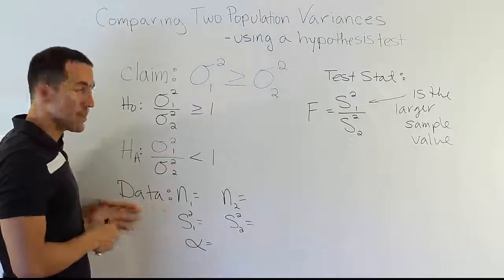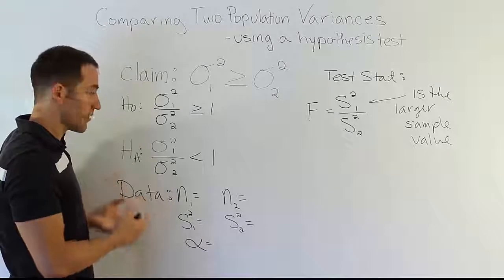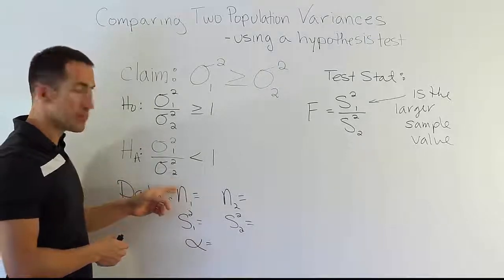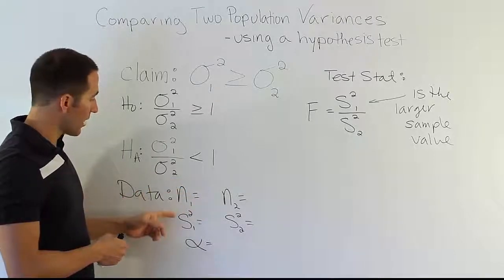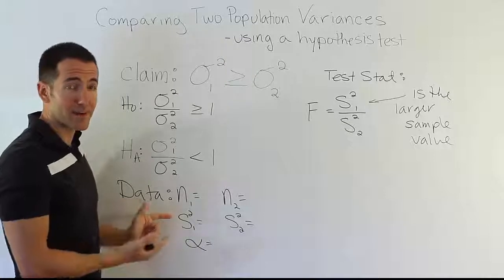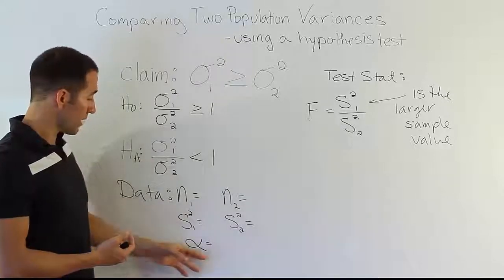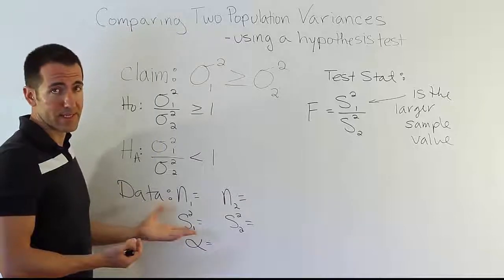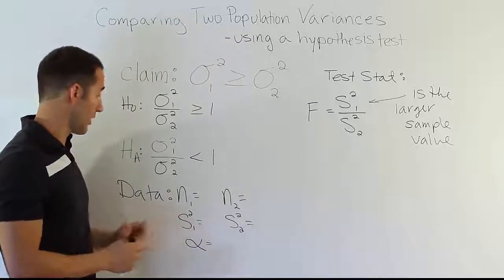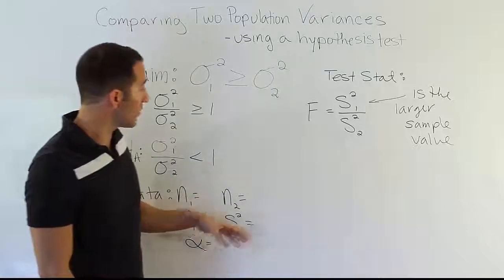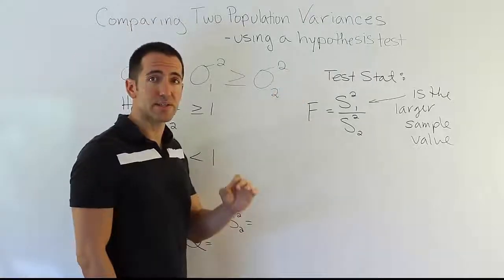Then we'll have some data that we need to use to solve the problem or to conduct the hypothesis test. We'll have sample sizes from each population that we're looking at. We will have a sample variance or standard deviation, which we will square to get a variance. And then we'll have a significance level. Sometimes the problems will throw in extra information that we don't need, like the sample means. They could do that, but we don't care about that. Don't need it for this procedure.